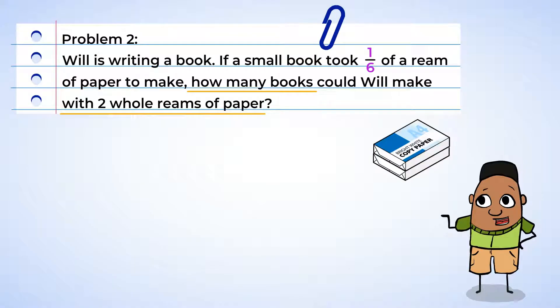Well, two reams of paper are our total that's going to be divided into groups of one-sixth, and this gives us the expression two divided by one-sixth. Now, for this problem, let's use a visual model.